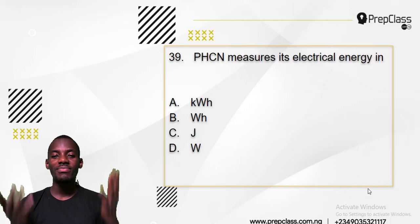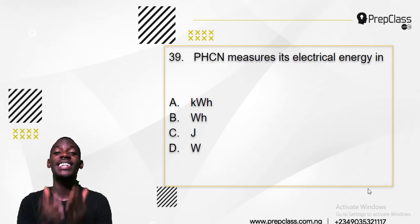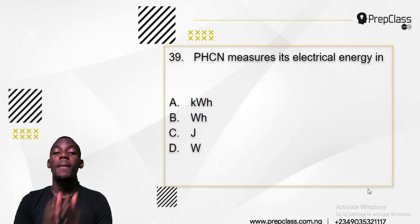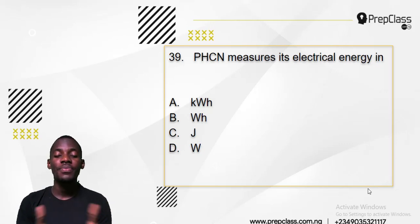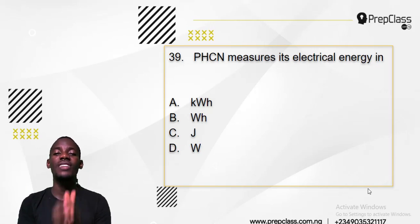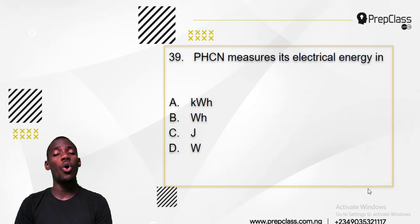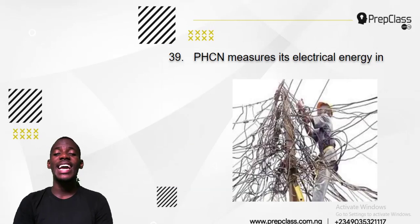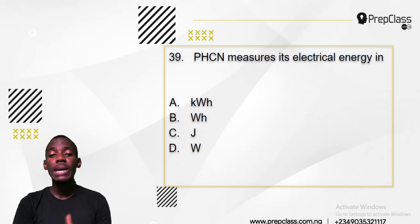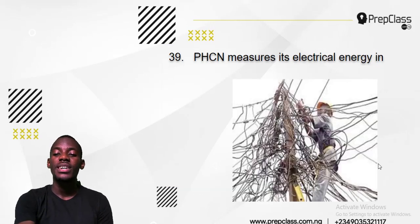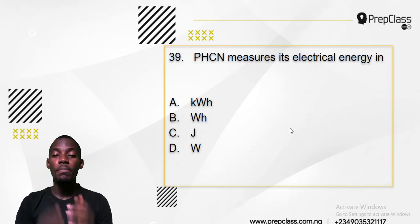Number 39: PHCN — do you know what that means? Everybody in Nigeria knows what PHCN is. PHCN means Power Holding Company of Nigeria, which was formerly NEPA. The power holding company of Nigeria measures its electrical energy in what? On your meter, the energy that you have bought is measured in kilowatt-hour. You should not be deceived into saying the energy is measured in joules — although it is energy, PHCN never measures their energy in joules.